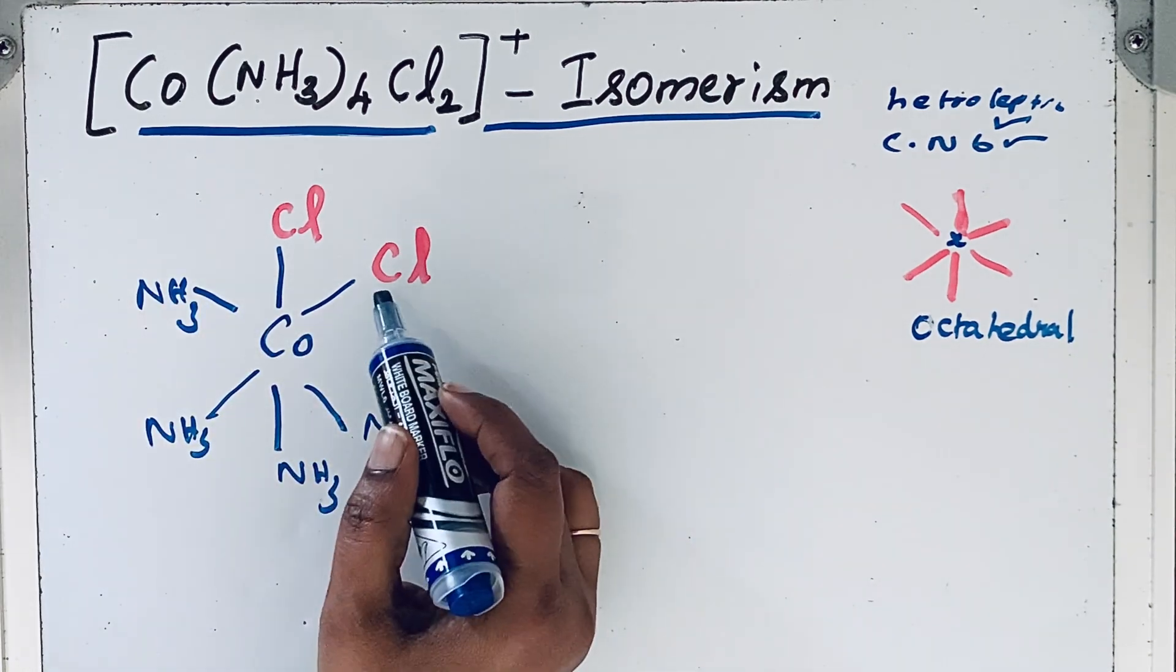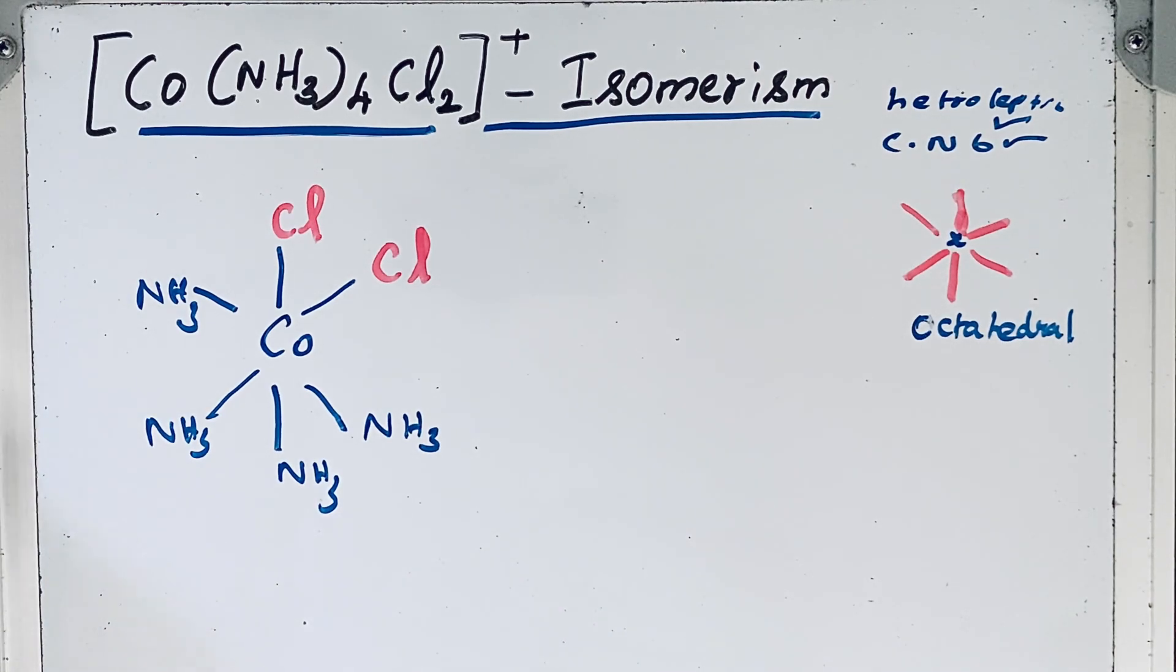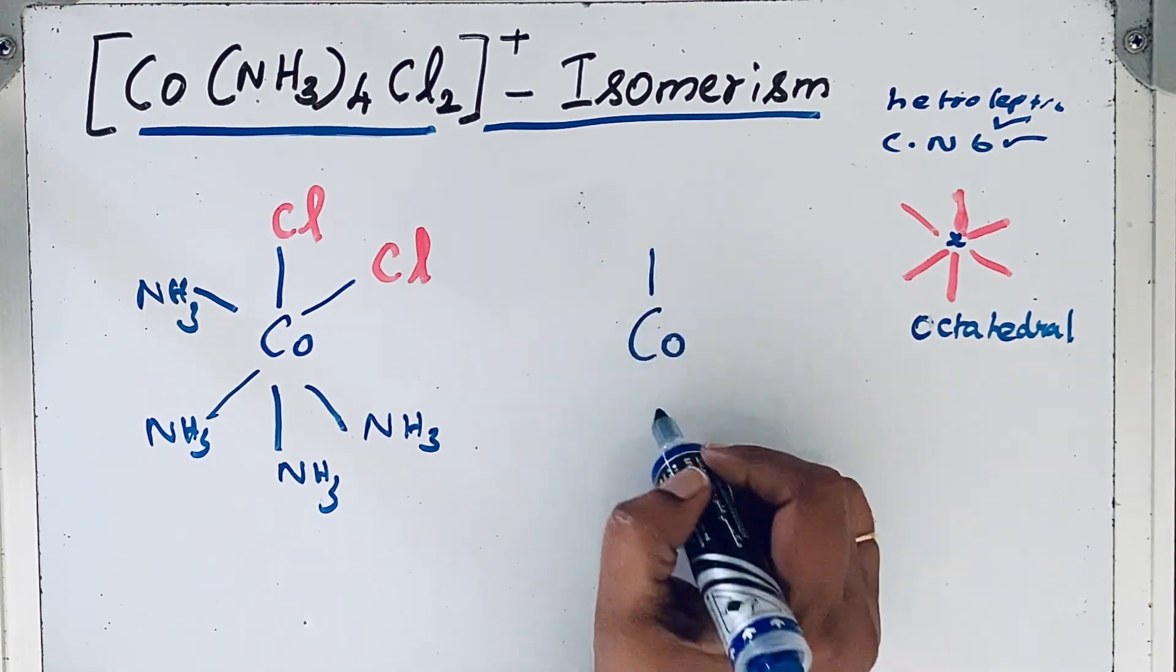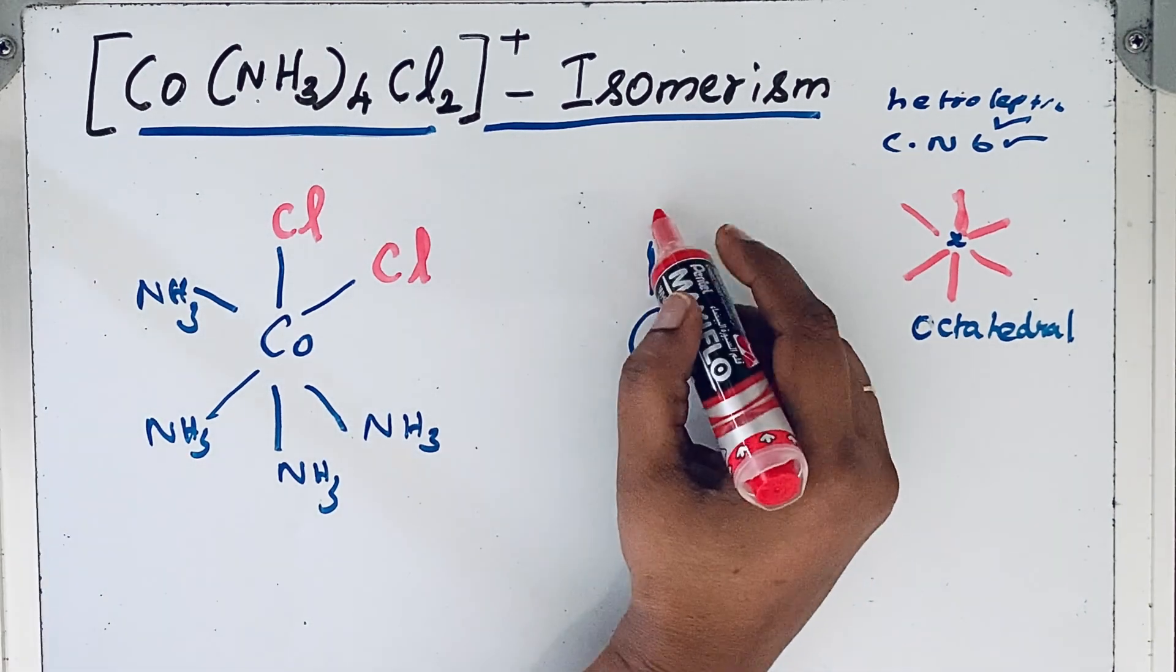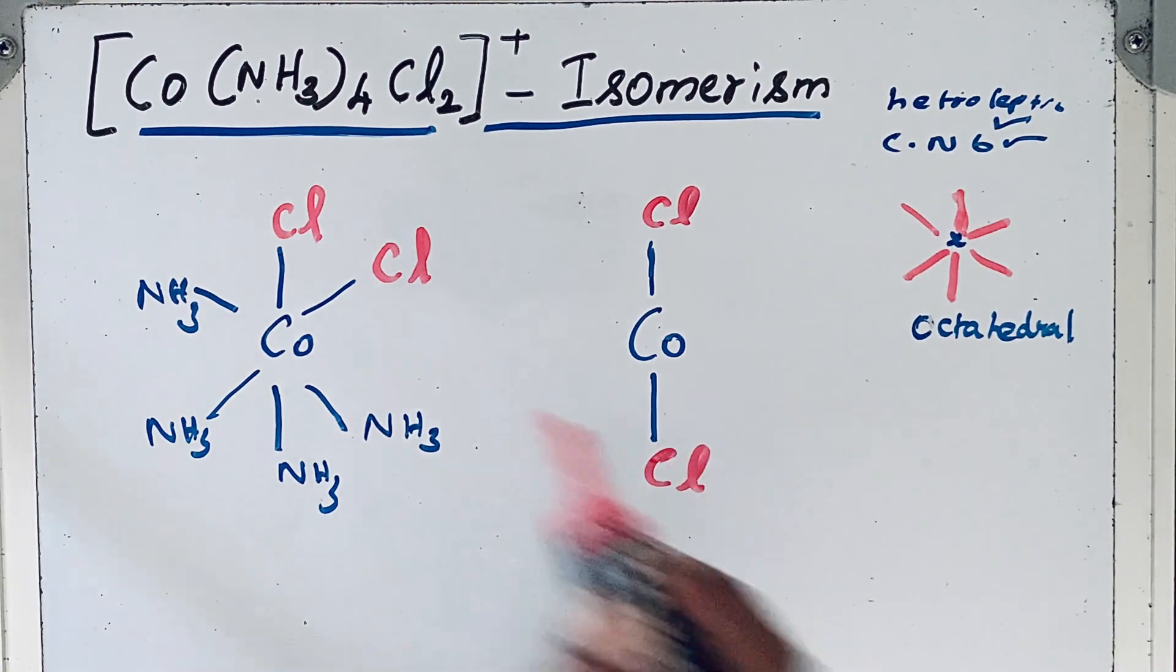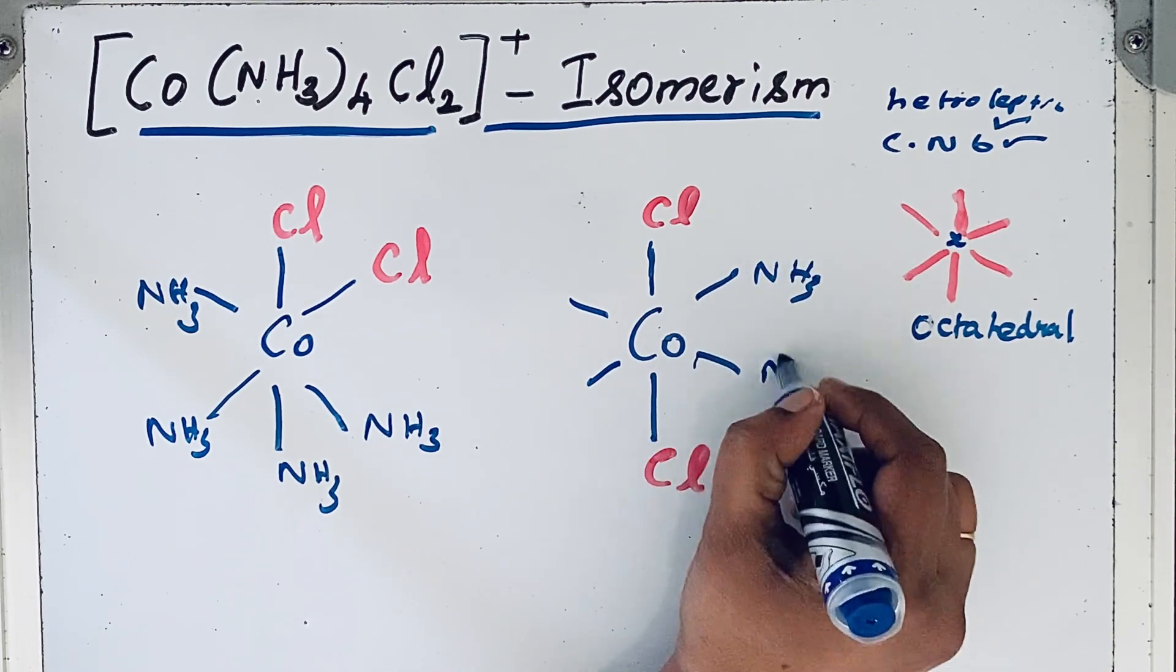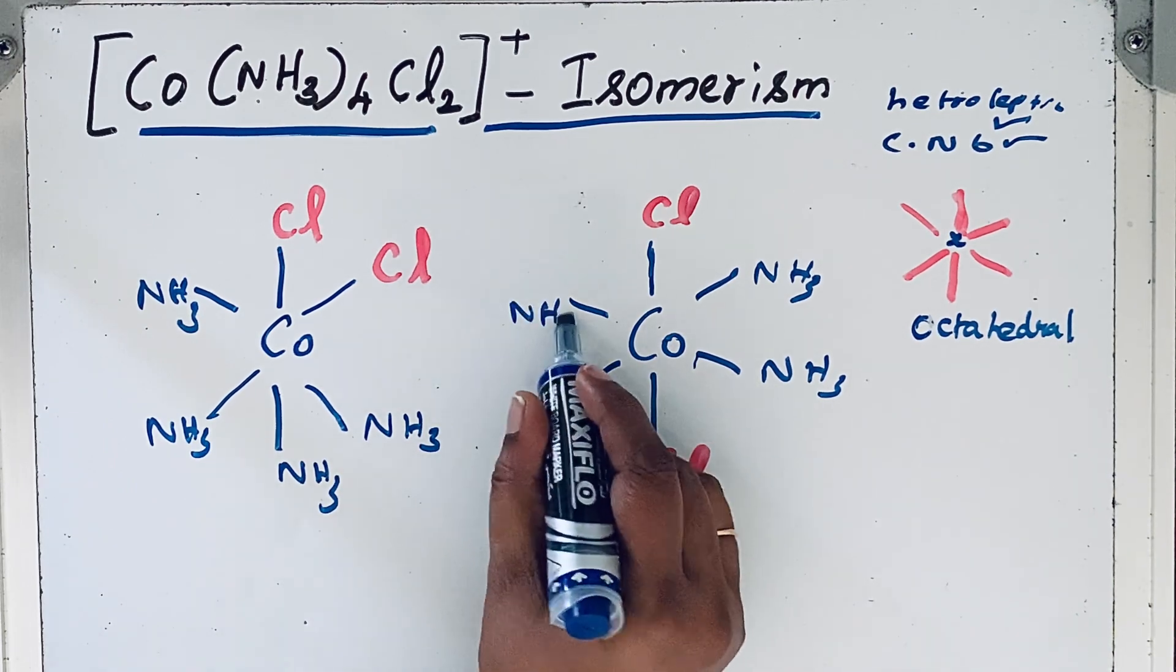Now there is another possibility. This Cl group we can draw opposite to each other. So the same way we are going to draw the central atom first, then we will show the first Cl group. Now the Cl group goes opposite to each other. Then all other remaining places we can draw the NH3 groups: NH3, NH3, NH3, NH3.